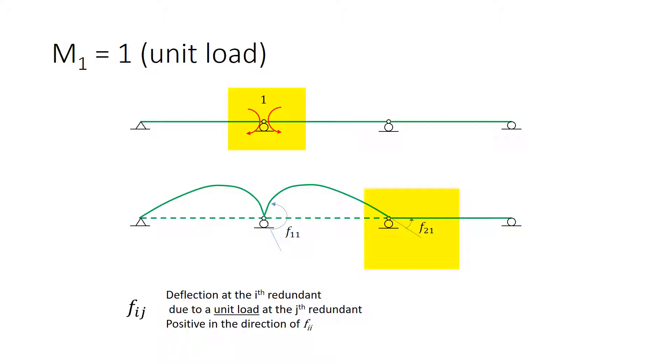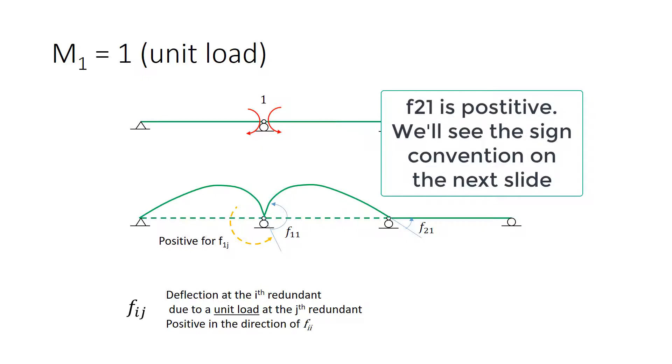But we're looking at the deformation now at the location of R2. So this one is labeled F2-1, the deformation, the deflection at the second redundant due to a unit load at the first redundant. And F1-1 identifies the positive direction for any deformation at that location. So the arrow shown here is the positive direction for any F with the first subscript being 1. Because we haven't done F2-2 yet, we actually don't know the sign convention yet for the other location. However, I'll let you know that it will be actually in the same direction as the positive direction for the F1-J.